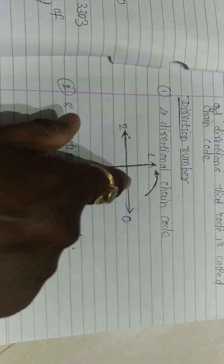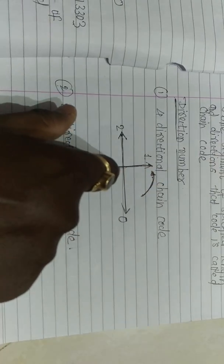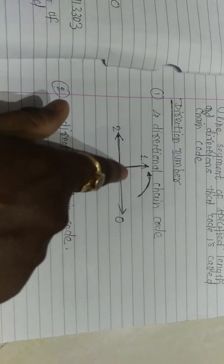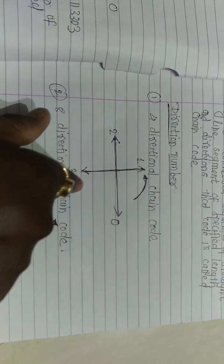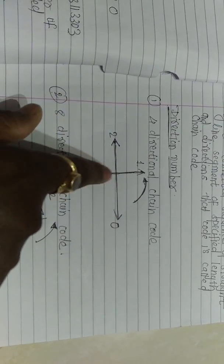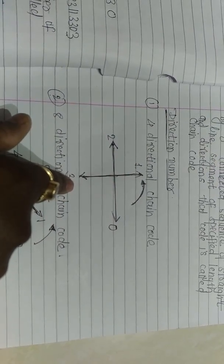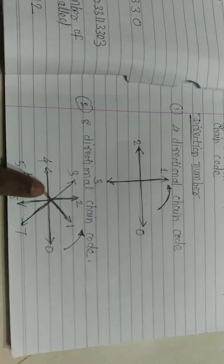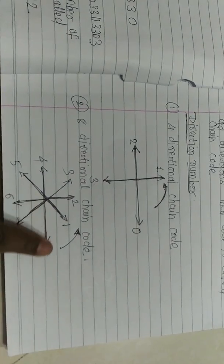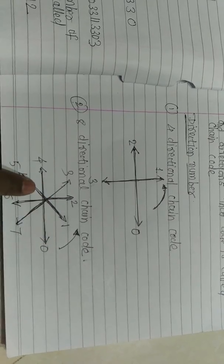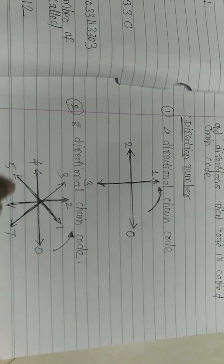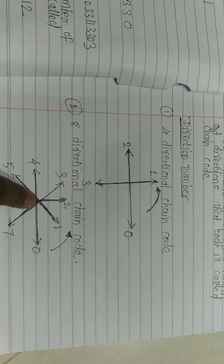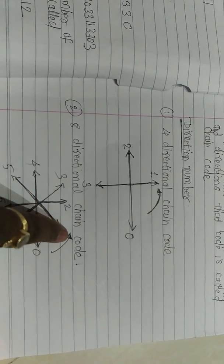When we go to the right side we take it as zero; when we go upward we take it as one; when we go to the left side we take it as two; and when we go downward we take it as three. Similarly, numbers 0 to 7 are considered for the eight-directional chain code, where we can also include the diagonal directions.